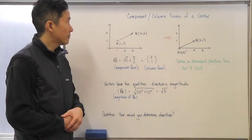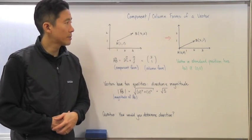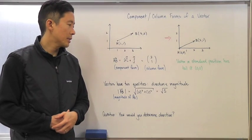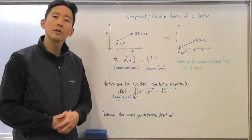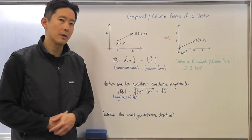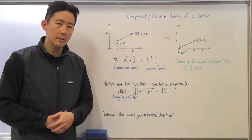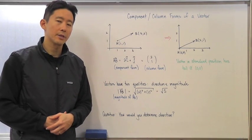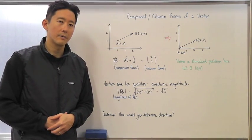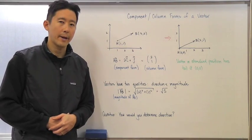So there you go — component and column forms of a vector and how to determine the magnitude. We'll talk more about how to determine direction next time. Give it your best shot, and we'll see you in class. Bye!